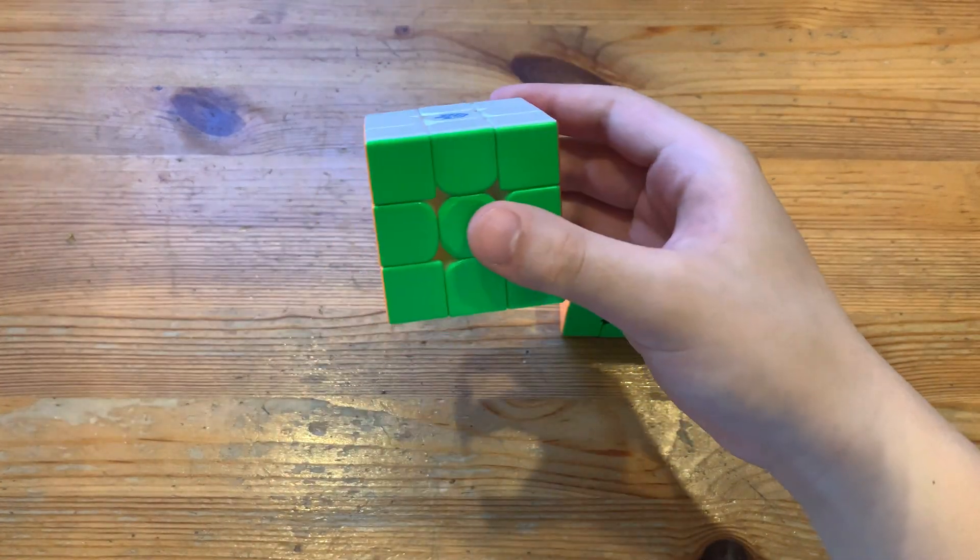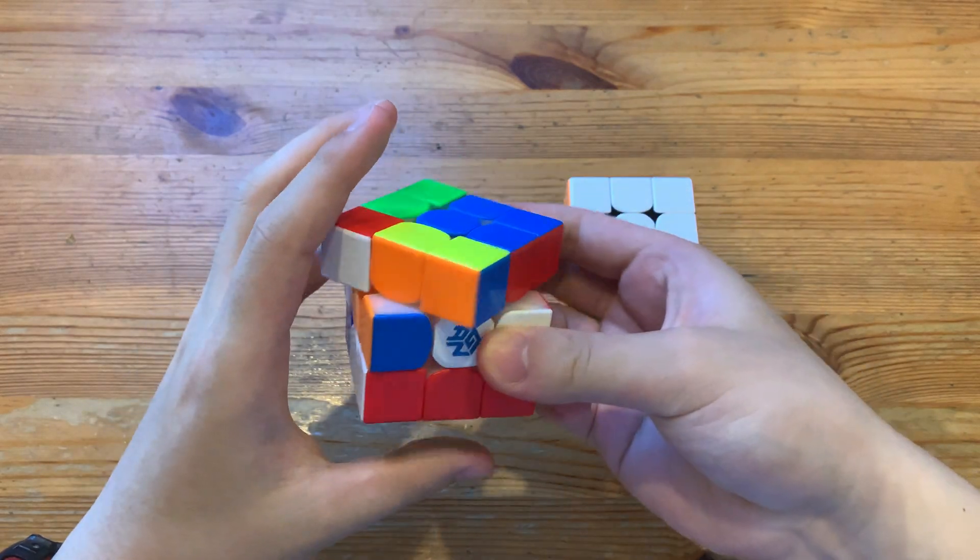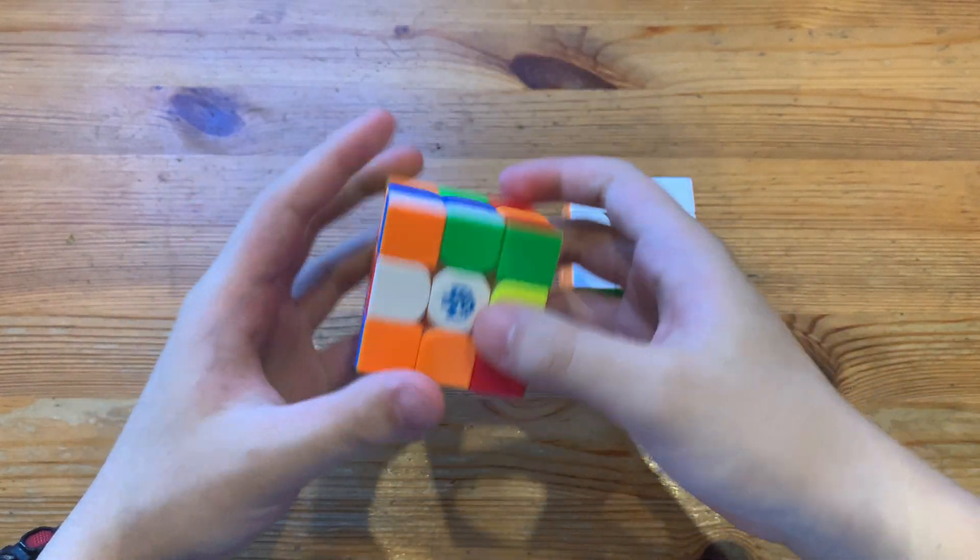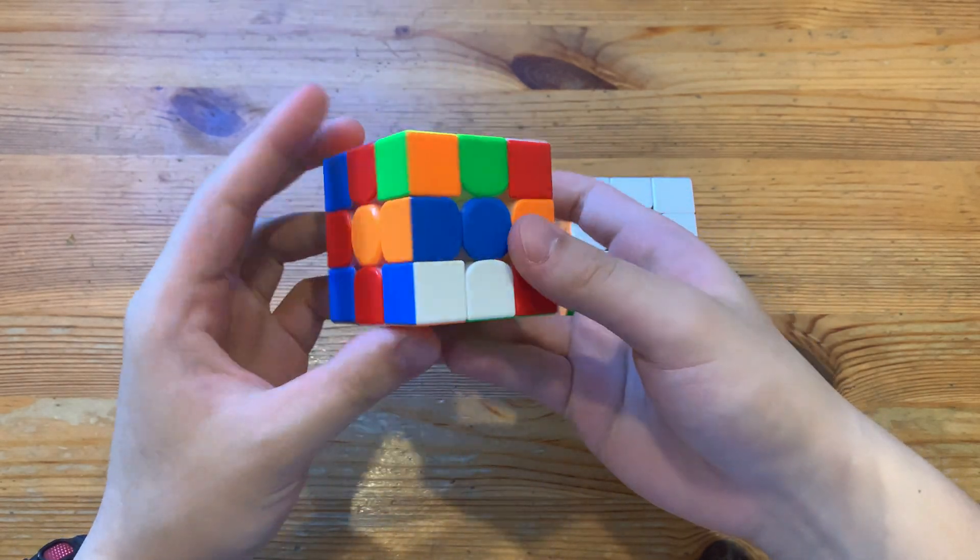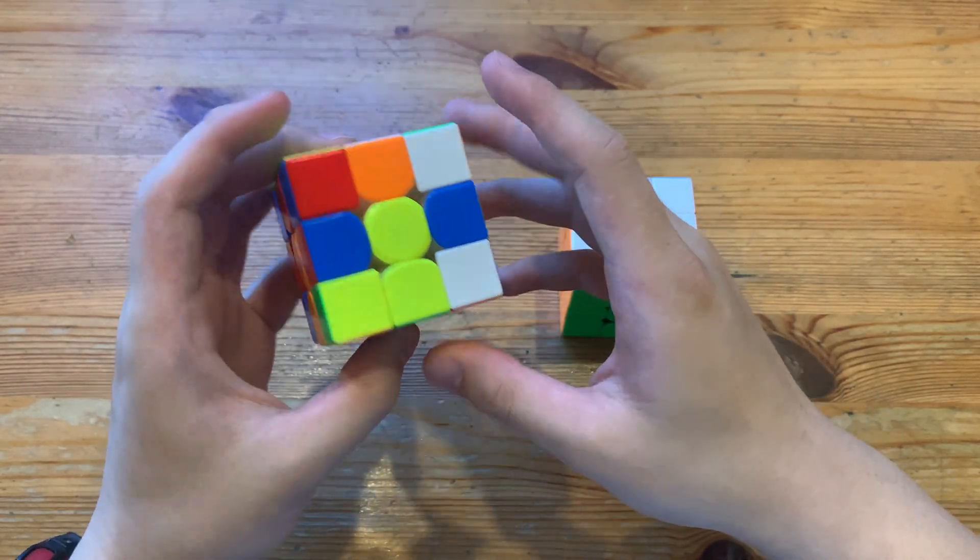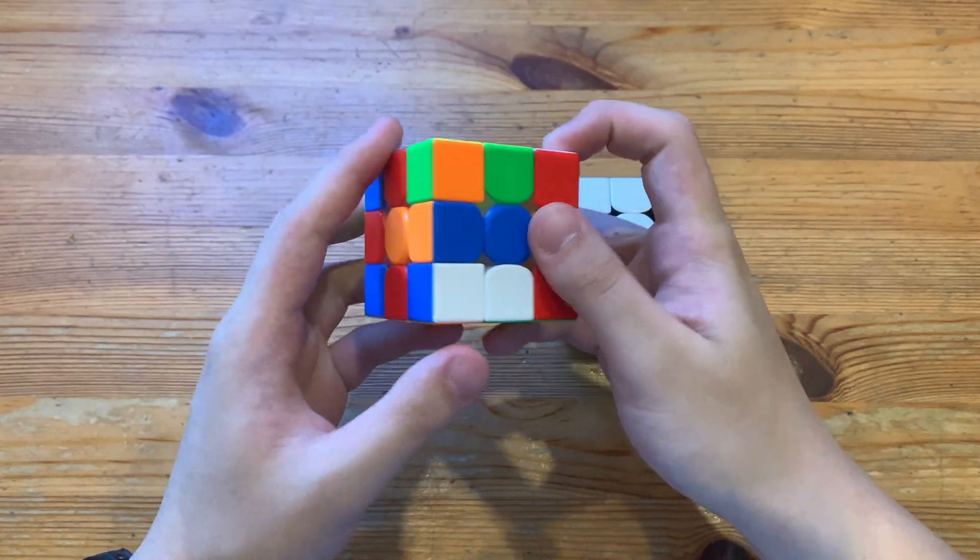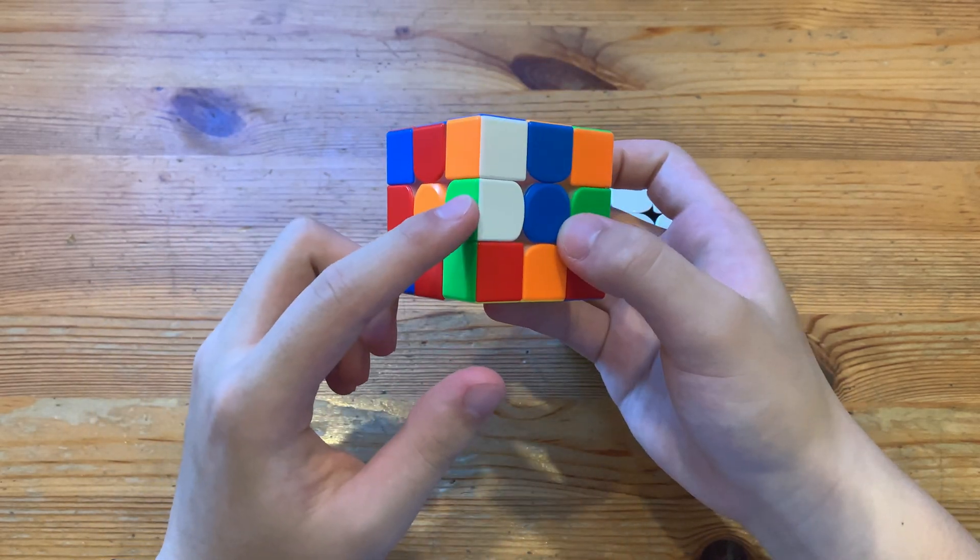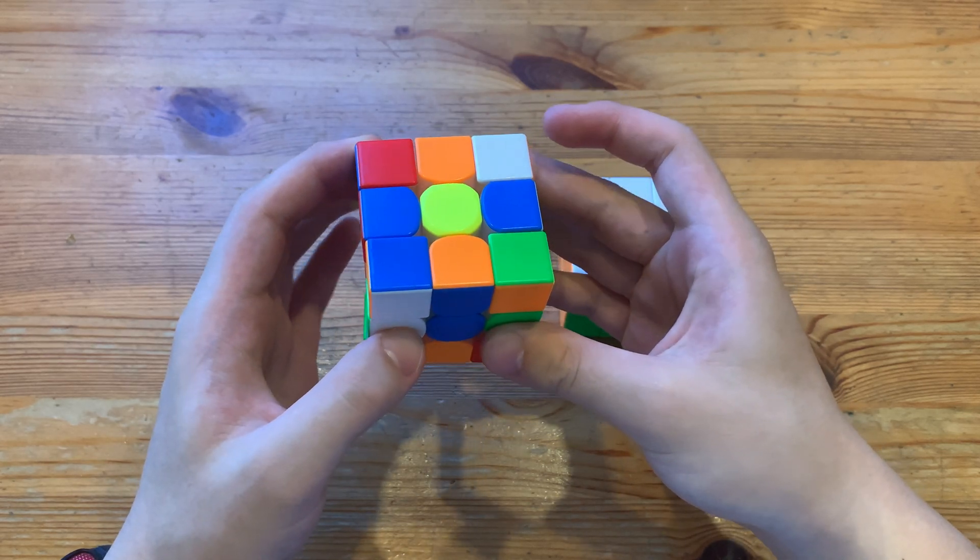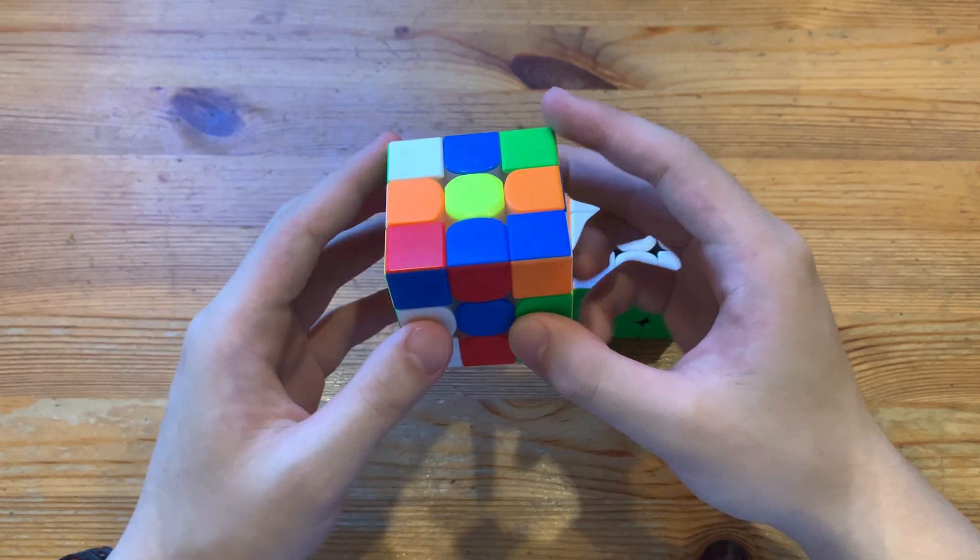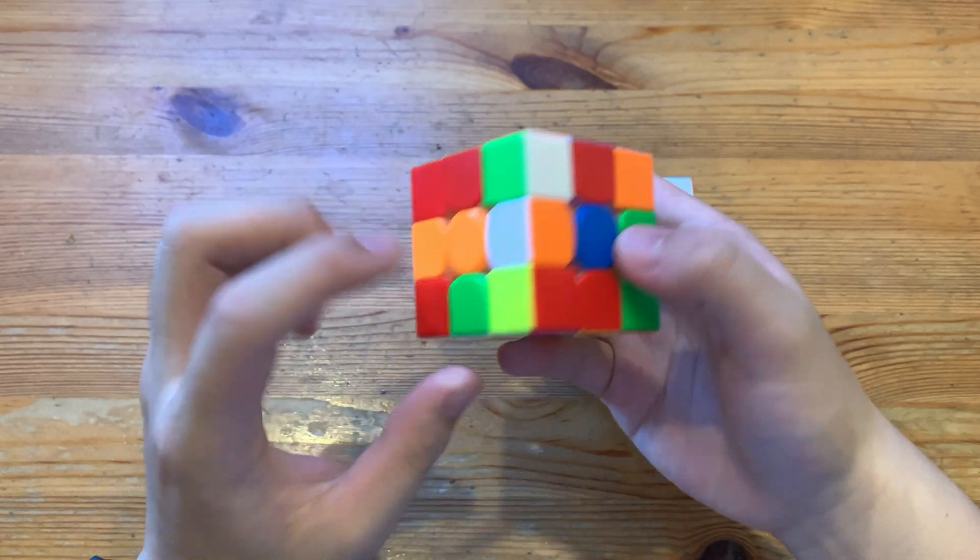And for solve number 2. Okay, what I'll do is f to move this over here, and then d prime, u prime at the same time, to move this into the back, and also move this over here. L to solve this, and then f prime to solve orange.